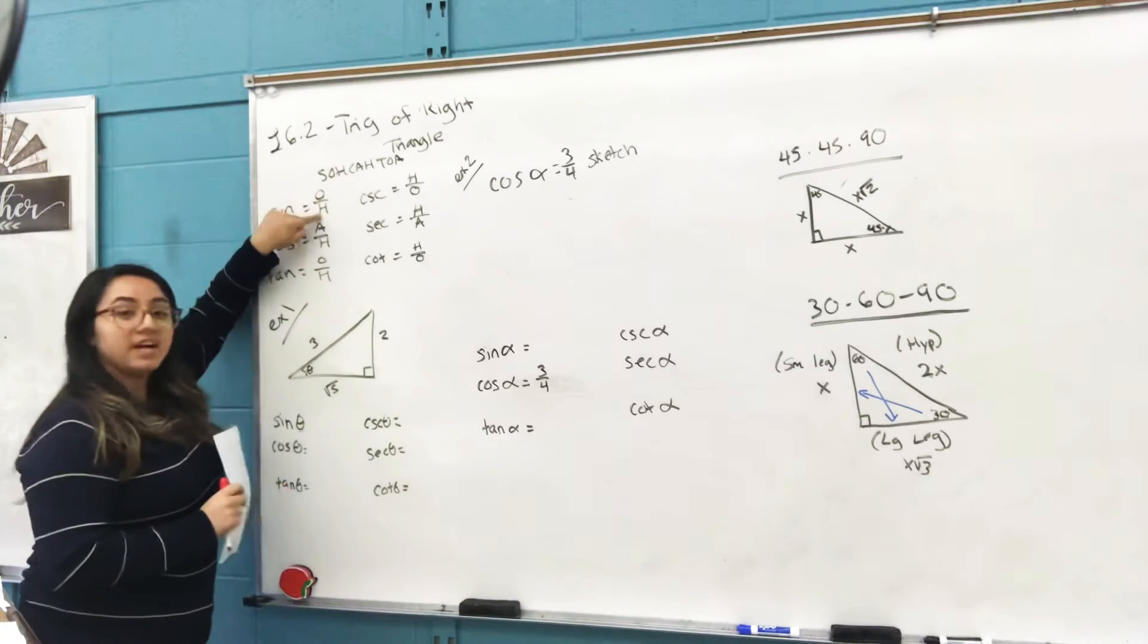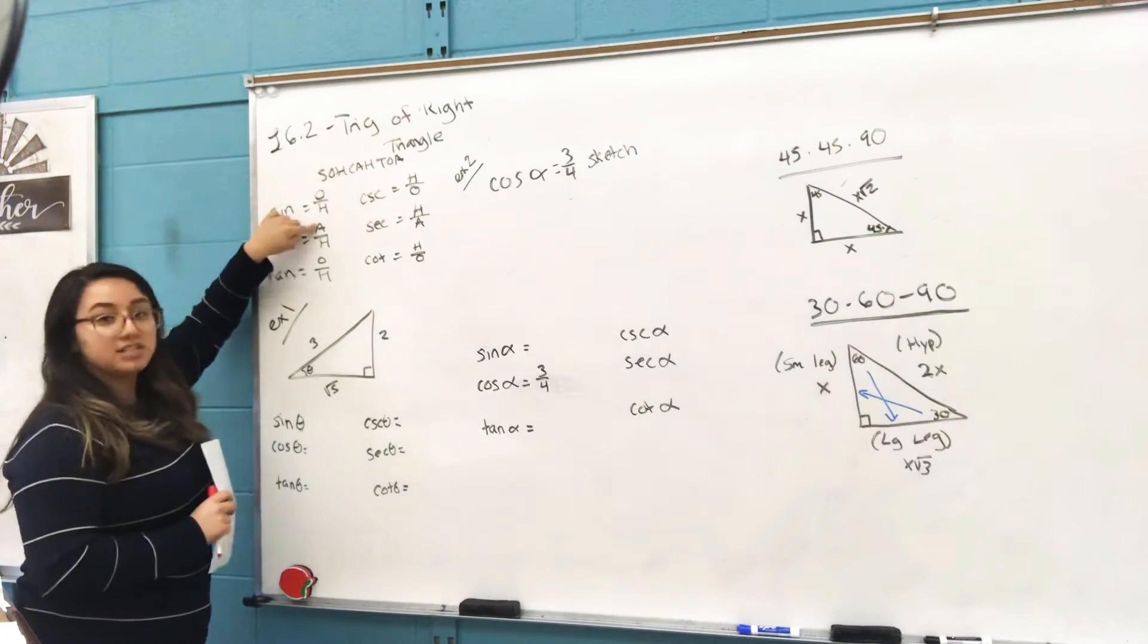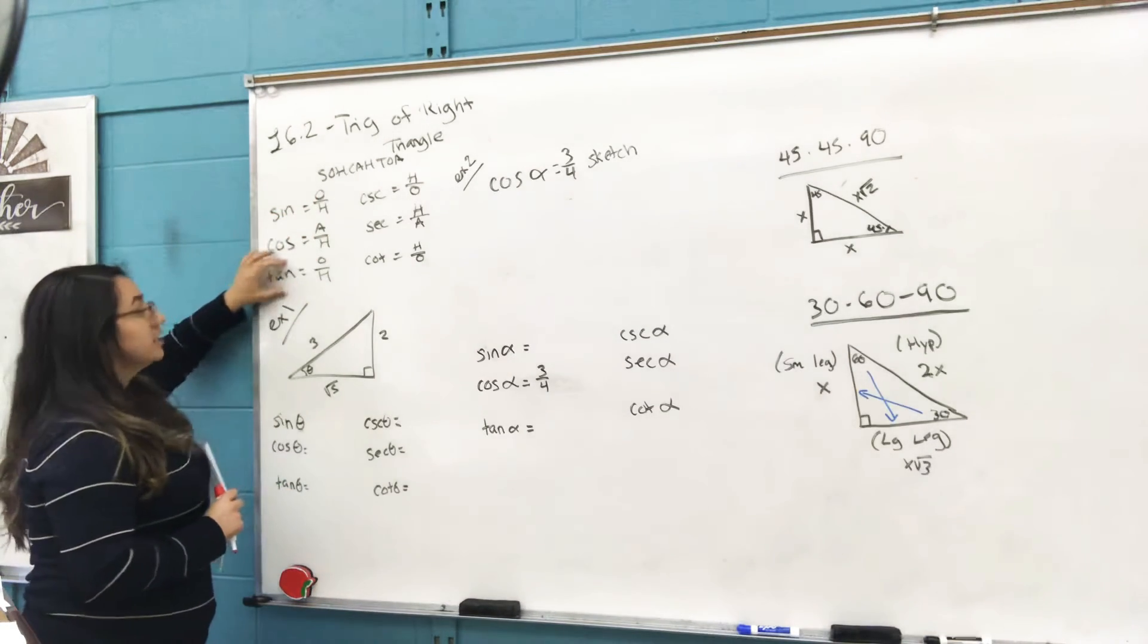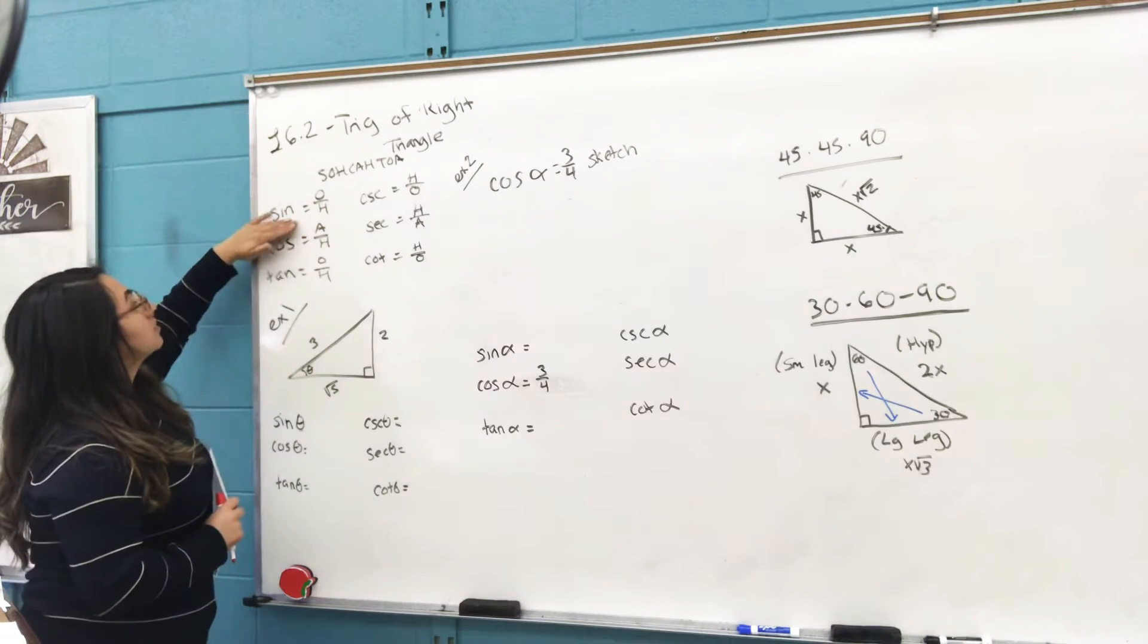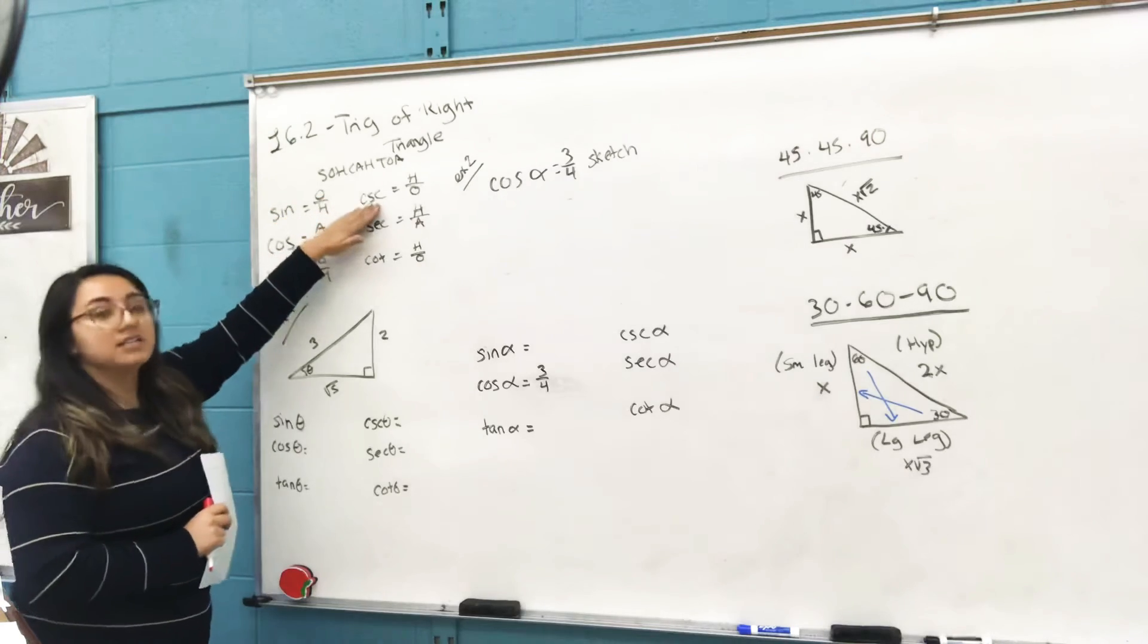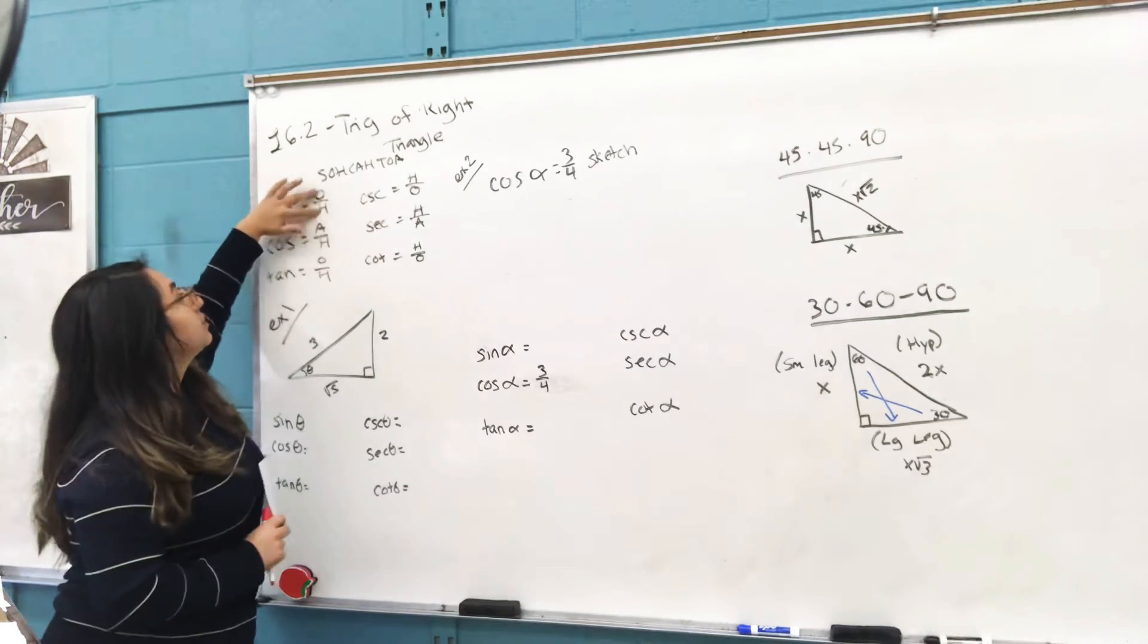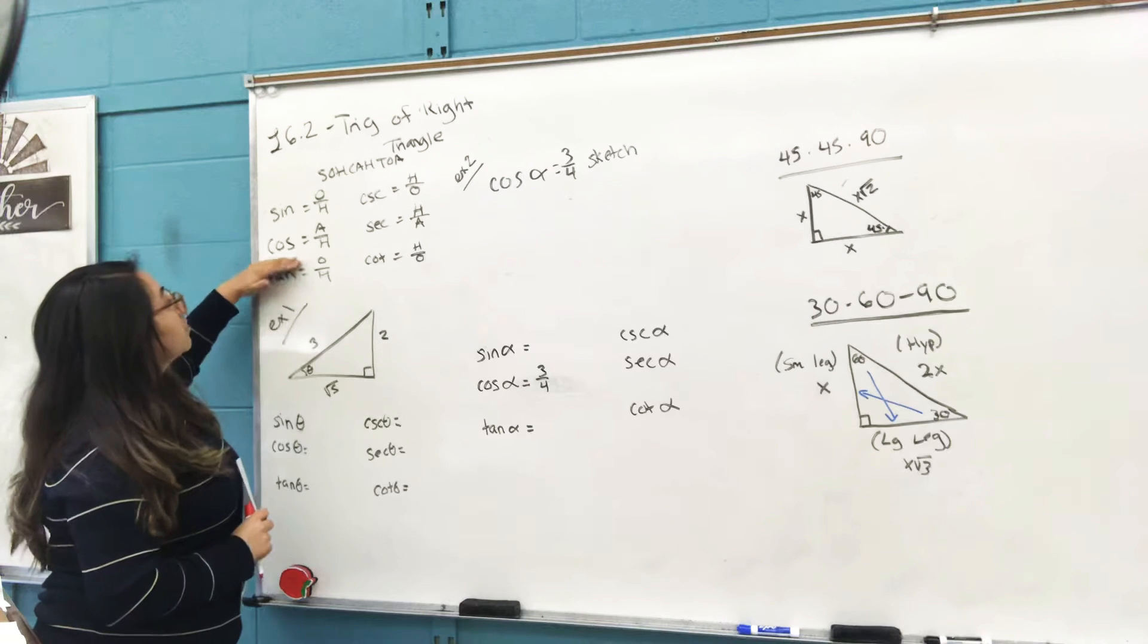Sine: opposite over hypotenuse. Cosine: adjacent over hypotenuse. Tangent: opposite over adjacent. And these are the reciprocal functions, so the reciprocal of sine is cosecant.